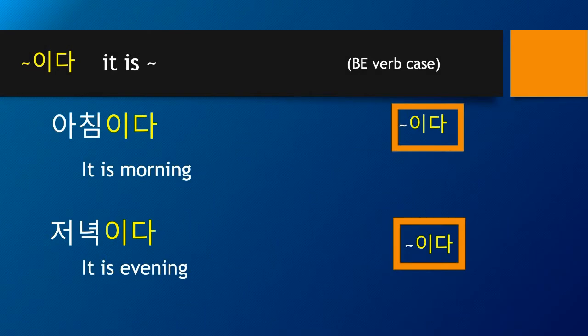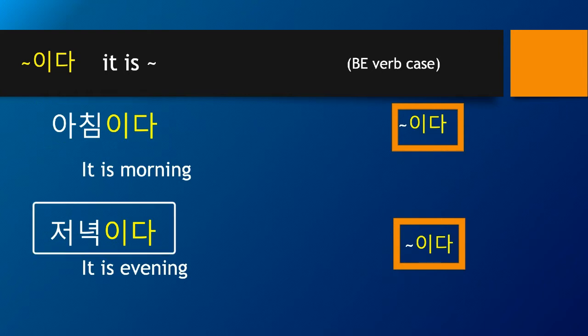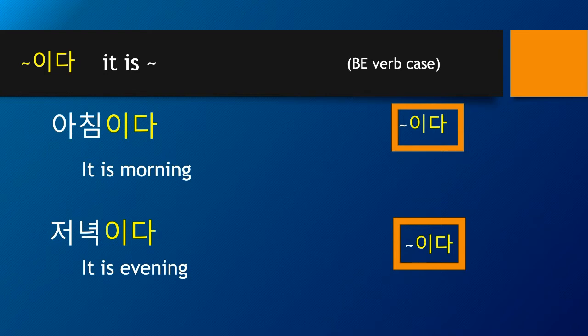The next one is 이다. 한글 이다 is most likely to be used as an English be verb. So 'it is morning' is 아침이다, and 'it is evening' is 저녁이다. Note that the 'it' part of the English sentence is omitted in 한글, so you don't say anything else except 아침이다 or 저녁이다. People will understand fully without specifically saying the 'it' or 'now' part. In 한글, if something is truly implied, you don't really need to say it.